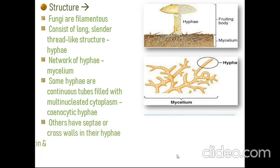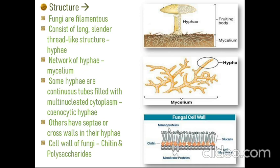The fungi cell wall is made up of chitin and polysaccharides — unlike plant cell walls which are made of cellulose, and bacterial cell walls which are made of peptidoglycan. All of these are different structures.